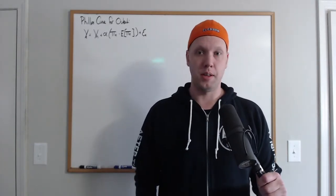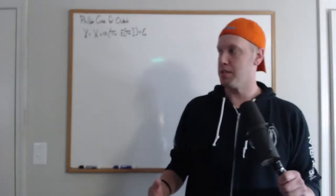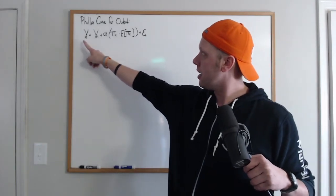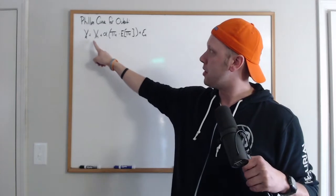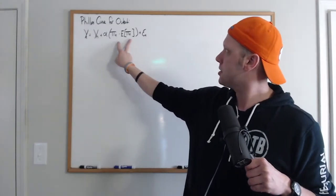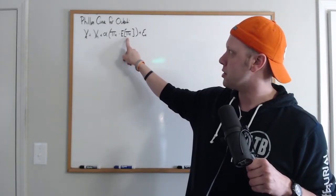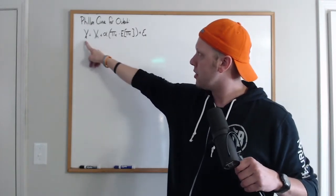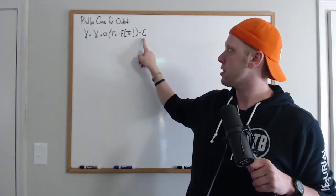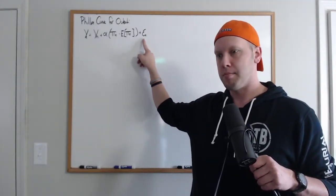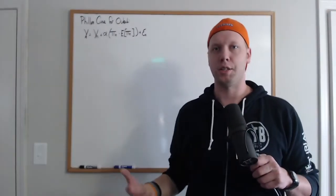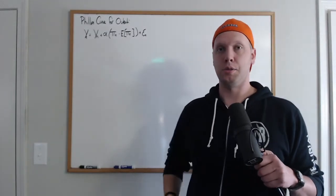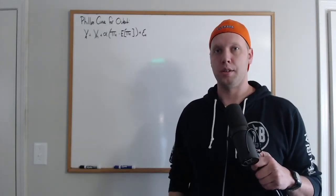With time inconsistency, we're going to look at what's known as the Phillips curve for output. We have the current rate of output as a function of the natural rate of output, plus deviations of actual inflation from expected inflation, where alpha captures the relationship that inflation deviations have on output, plus an error term epsilon representing supply shocks — such as a technology shock or a shock to labor supply.